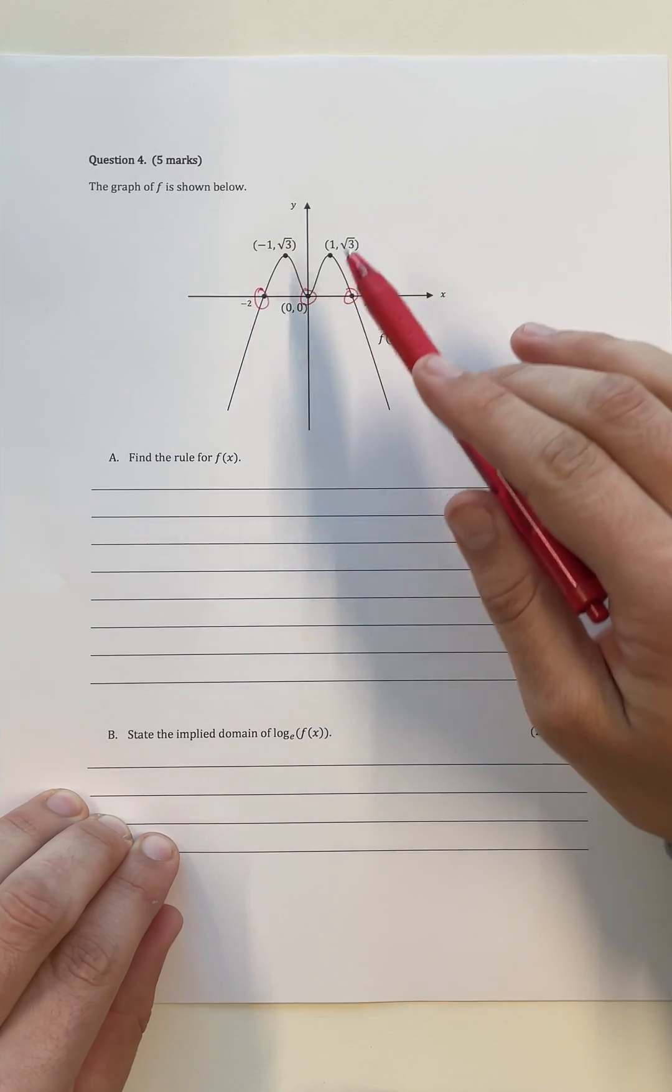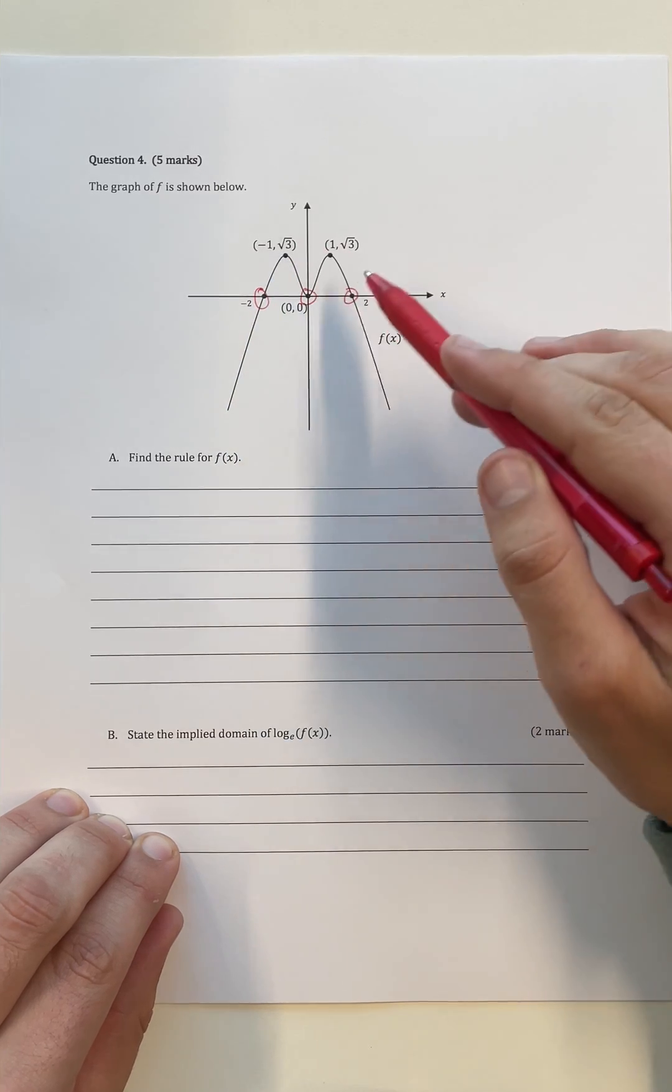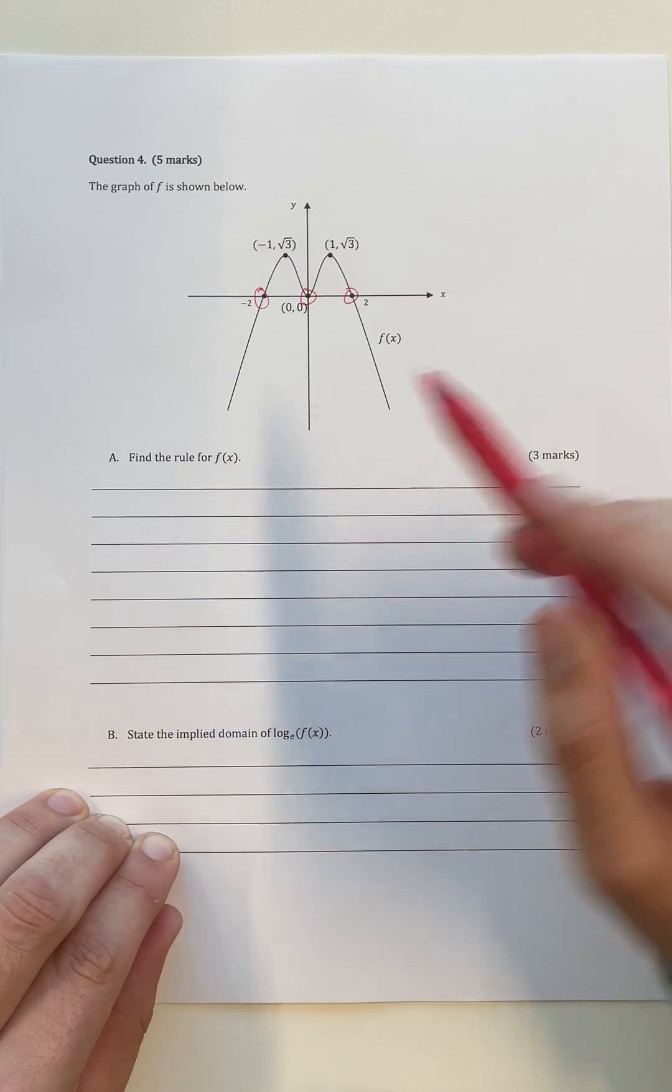If you're doing VCE methods this year, you need to understand this question before your first SAC. In this case, we're given the graph of f shown here, and we're asked to find the rule for f of x.